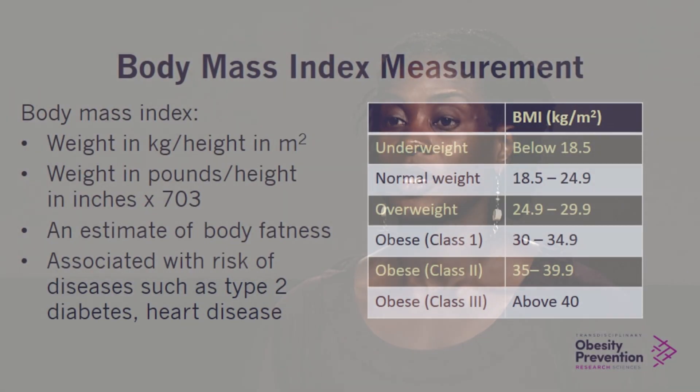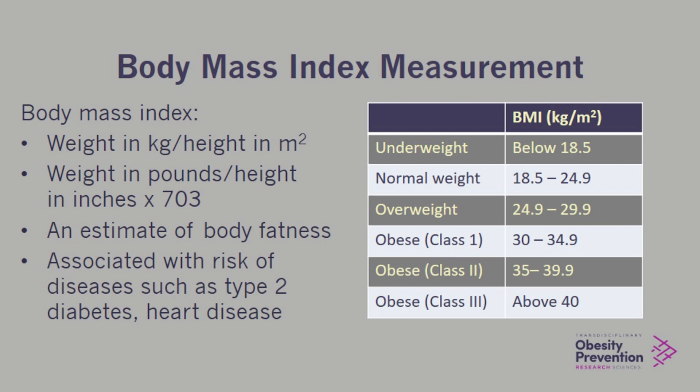Obesity is defined as having an excess of body fat, and we focus on having too much body fat because that is harmful. Body fatness can be measured directly or can be estimated. Body fat is estimated by the Body Mass Index measure. This is body weight in pounds or kilograms divided by height in inches or centimeters, and the height value in the denominator is squared, so that tallness has a lowering effect on the measure.